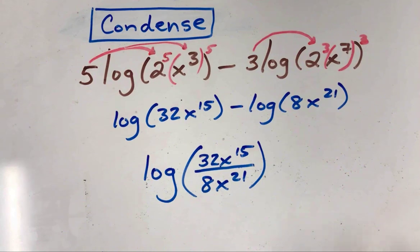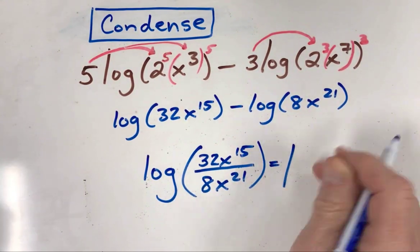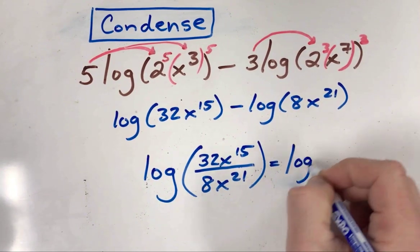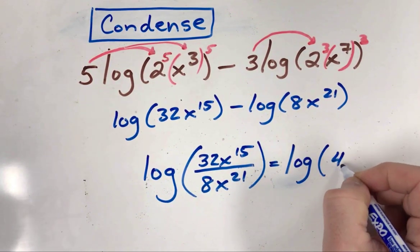To finish this, reduce the fraction thirty-two over eight. Thirty-two divided by eight gives you four on the top.